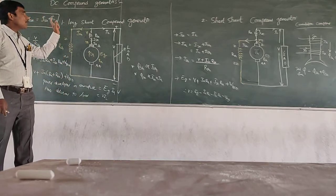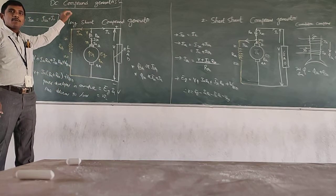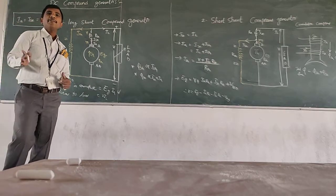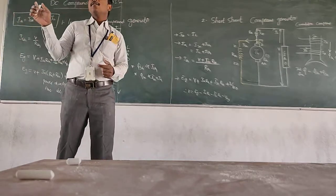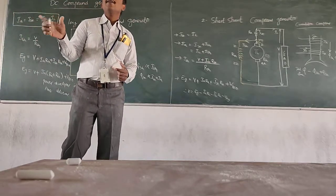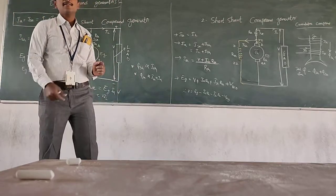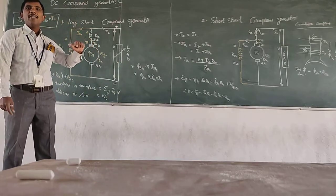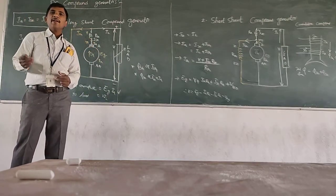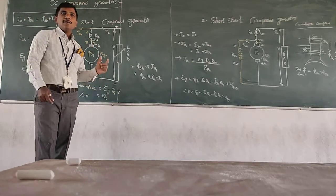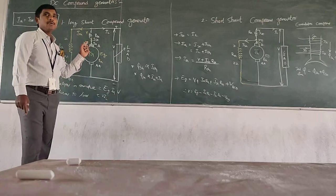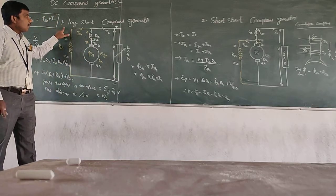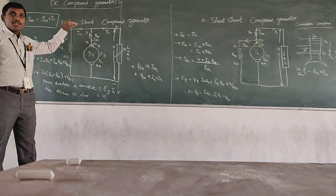Today we are going to discuss DC compound generators. In the last video we discussed about shunt and series generators. According to the method of connection of shunt field winding and series field winding, the compound generators are classified into two types: long shunt and short shunt.